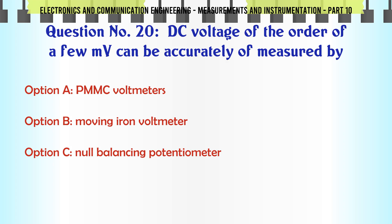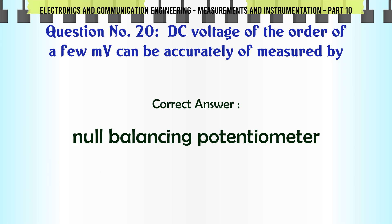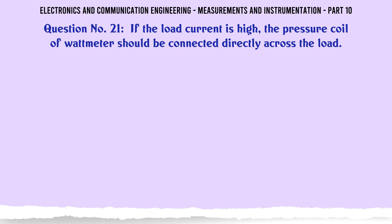DC voltage of the order of a few mV can be accurately measured by: A) PMMC voltmeters, B) moving iron voltmeter, C) null balancing potentiometer, D) electrostatic voltmeter. The correct answer is null balancing potentiometer.